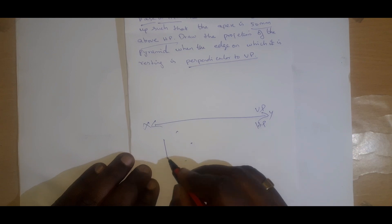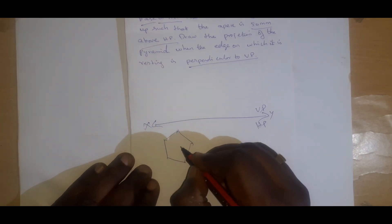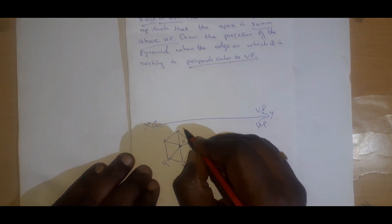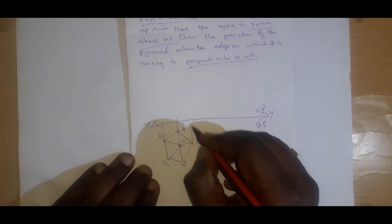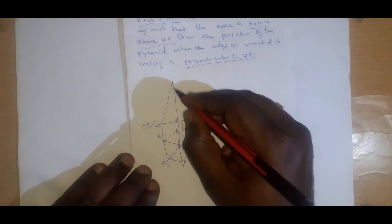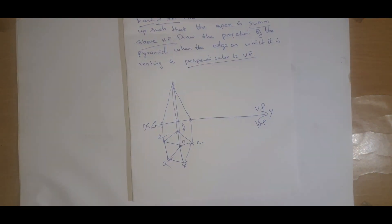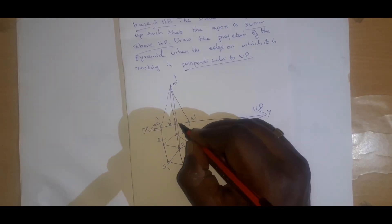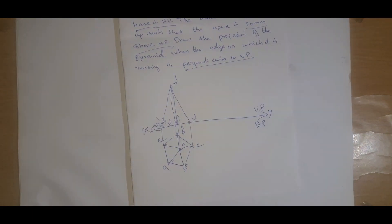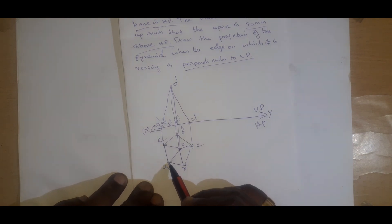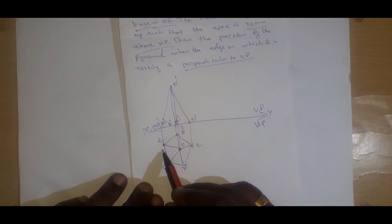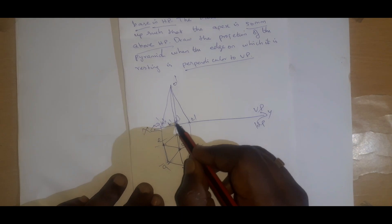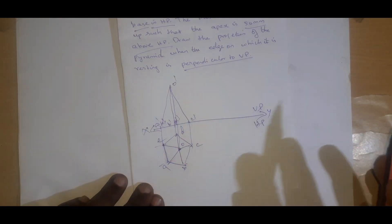Next, we can identify the other points of the pentagon using the engineering template, and also identify the midpoint. Here this will be the apex point A, B, C, D, E. So here this will be O dash, A dash, B dash, C dash, D dash (in bracket) and E dash (in bracket). This is the resting base edge — it is resting on HP. The dimensions are 30 mm and the altitude is 60 mm.